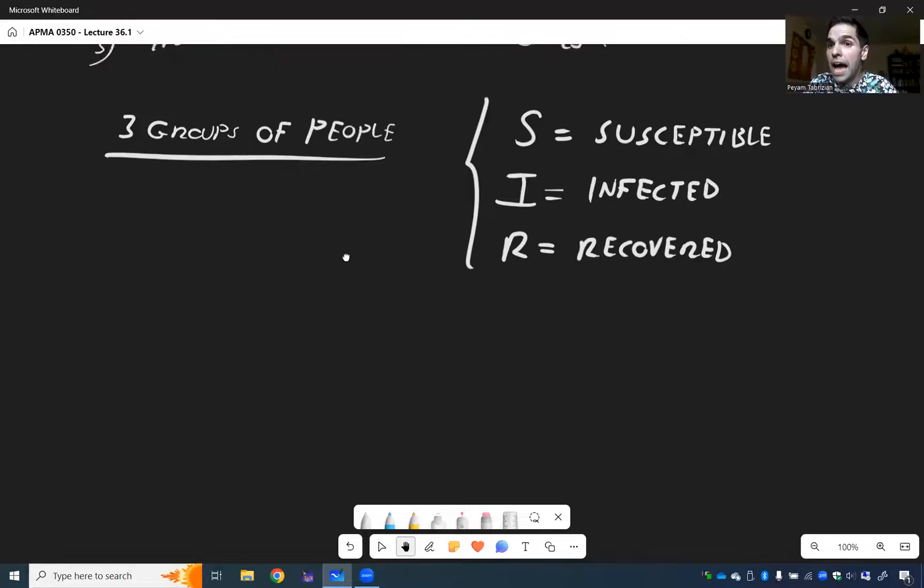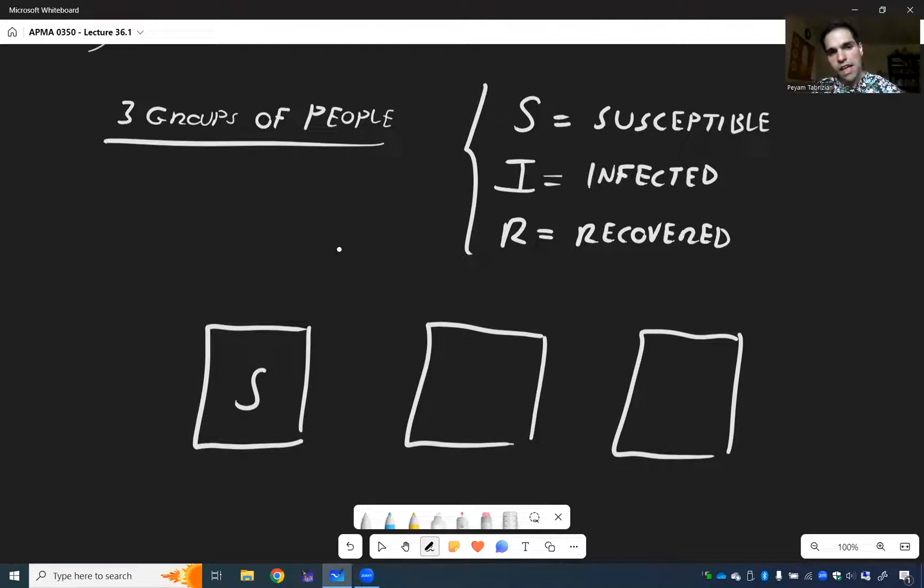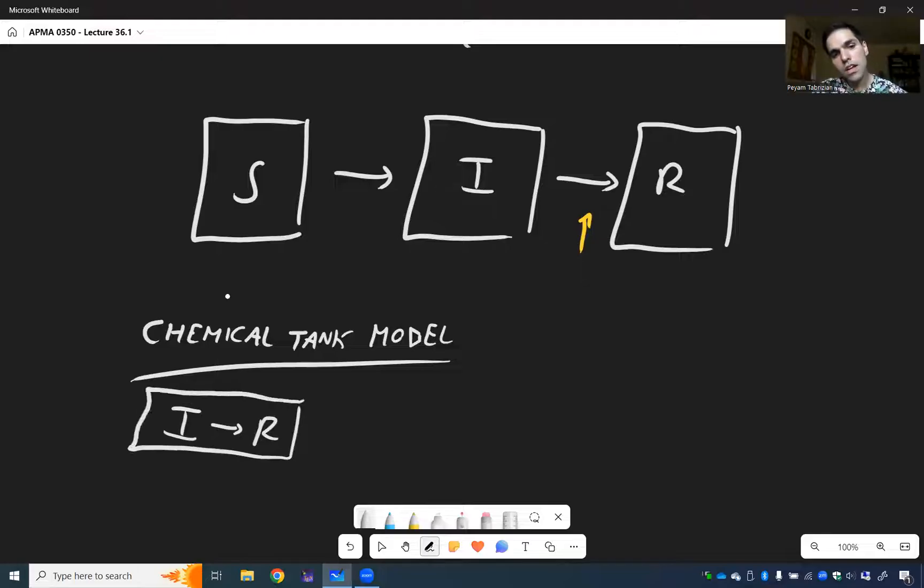And so because of the dynamics, it makes sense to think of it as a chemical tank problem. So again, here we have the susceptible people, the infected people, and the recovered people. And let's think a little bit about the interaction between all of them. So again, chemical tank, or it's what we call a compartmental model. First of all, let's focus on the second arrow here, the I to R. And in this case, let's just assume this rate is constant.